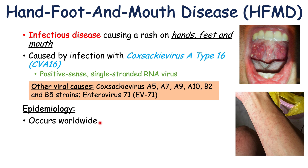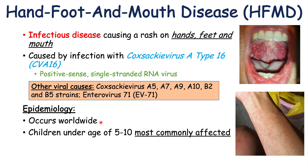Hand, foot, and mouth disease occurs worldwide — it has a worldwide distribution. It most commonly affects children, especially very young children under the age of 5 to 10. Having said that, this condition can infect adults as well. Because children are the most commonly affected group, we're going to see a lot of cases in daycares, summer camps, and within families.